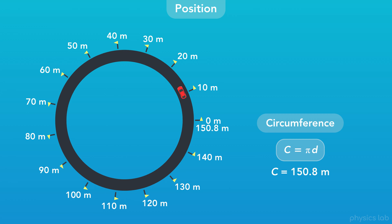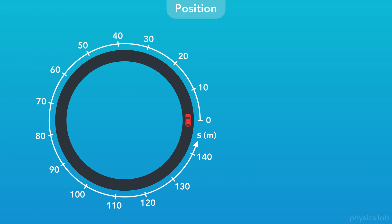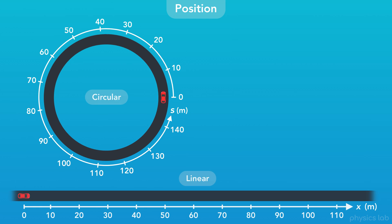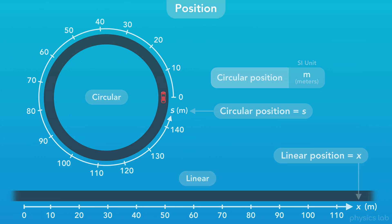That's the total length of the path around the circular road. Instead of using flags, let's use a curved circular axis — this is how we measure position in circular motion. This looks similar to the axis for linear motion, but instead it's wrapped around in a circle. And instead of using the variable x for linear position, we're going to use the variable s for circular position. Just like with linear position, the SI unit for circular position is meters.